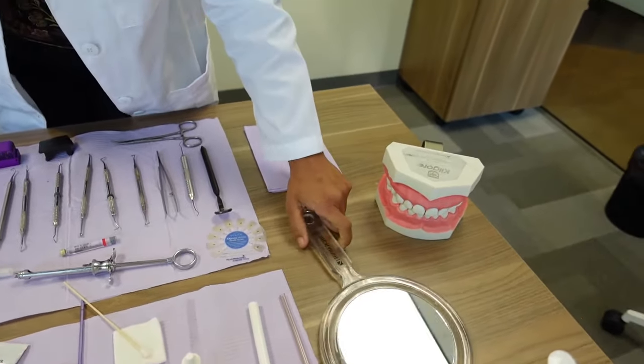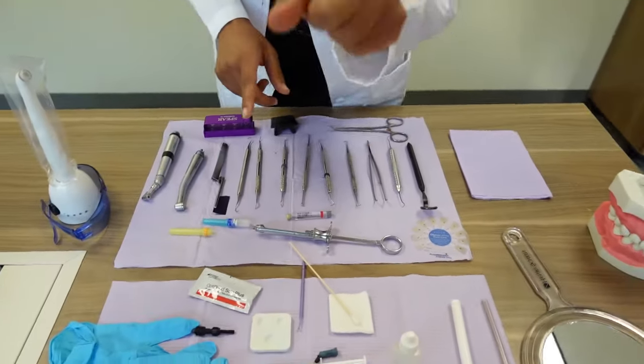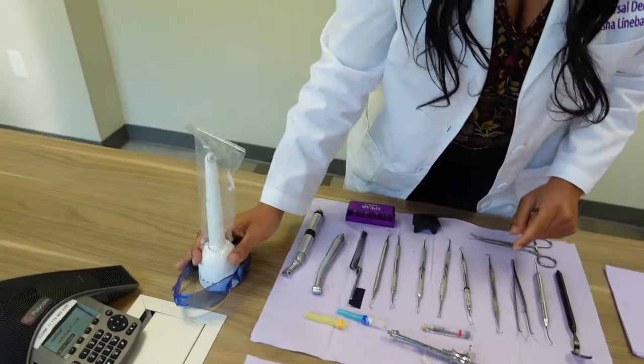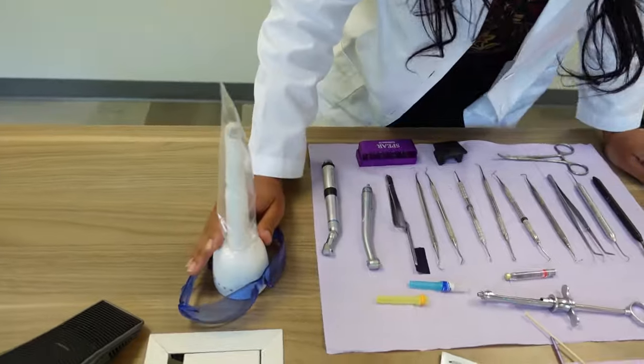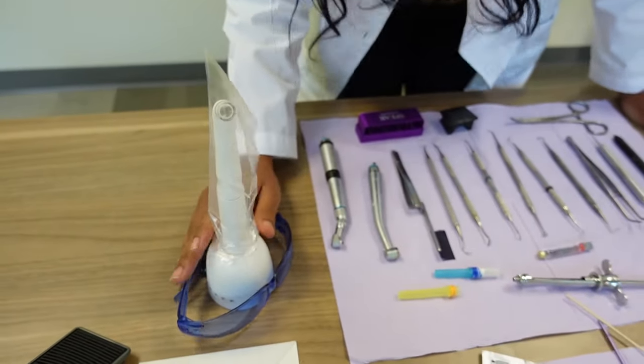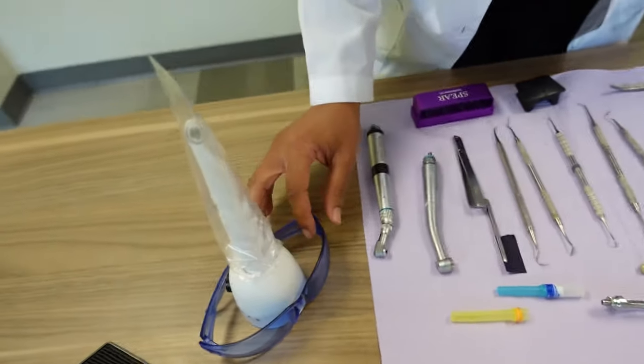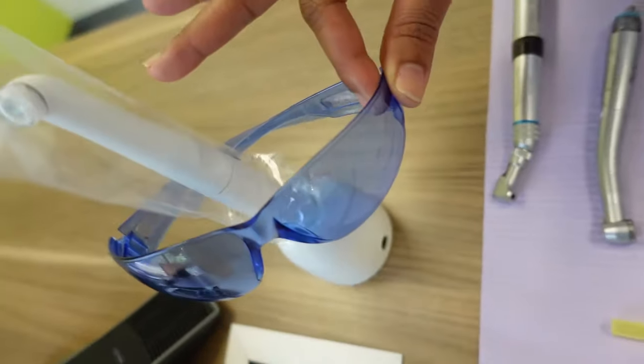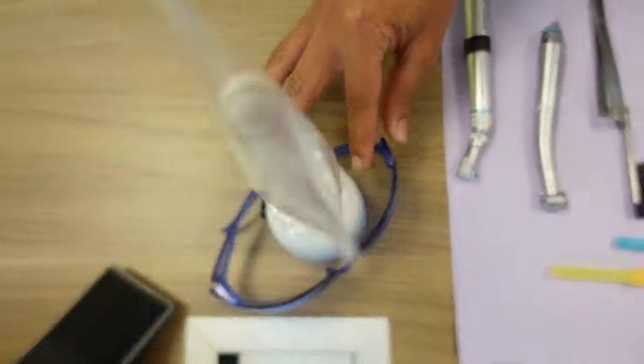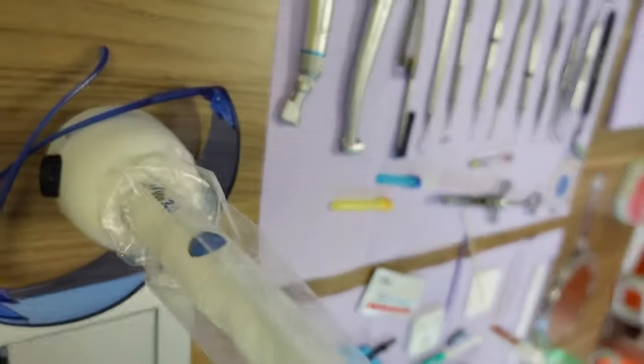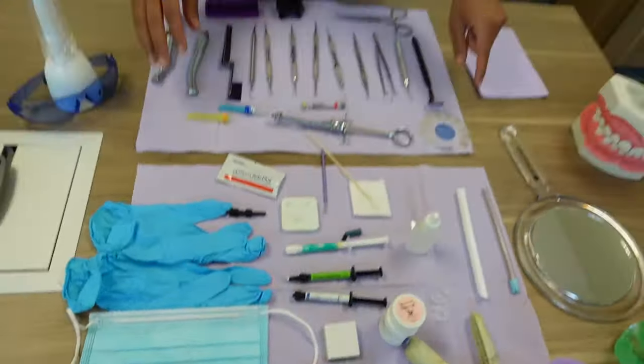Oh, hold on, one more thing—the light curing light. I forgot to mention that. Of course, you can't light cure composite without a light curing light. So this is the light curing light right here, and these are the glasses that you put on to protect you from the UV light.